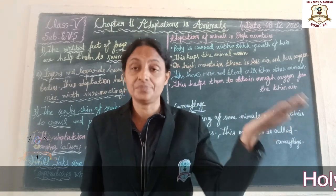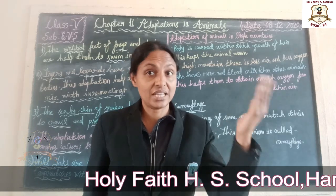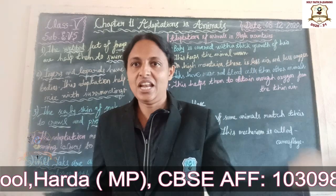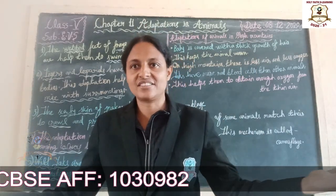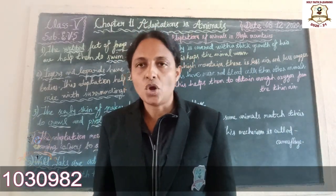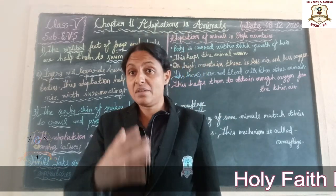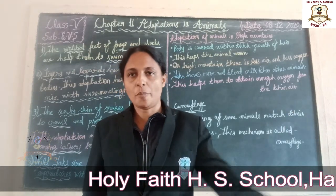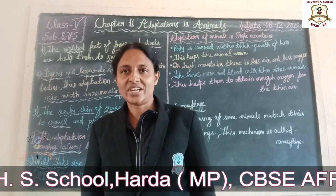First of all, we learn about terrestrial and aquatic animals. Terrestrial animals means animals that live on land — elephant, cat, dog, many examples are there. Aquatic animals means animals that live in water — octopus, fish, crocodiles. Many examples are there.